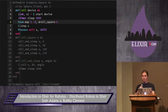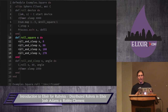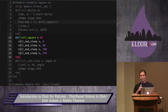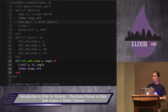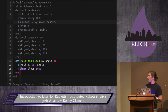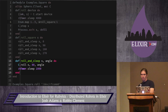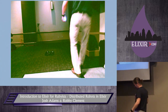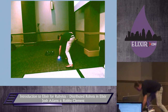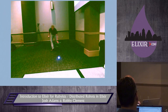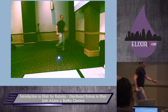It's pretty simple. The roll_square function calls roll and sleep, taking the state and the angle. The roll_and_sleep function calls roll, passes the state, a speed of 80, and the angle. It doesn't get any easier. So we're going to go ahead and demo this.